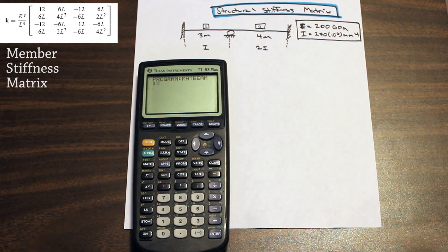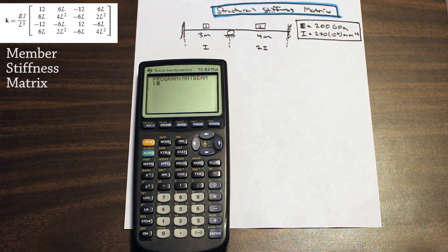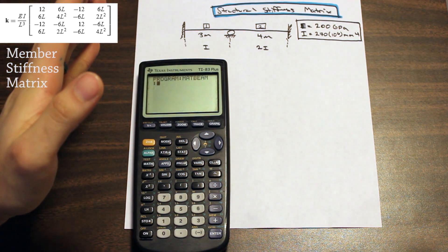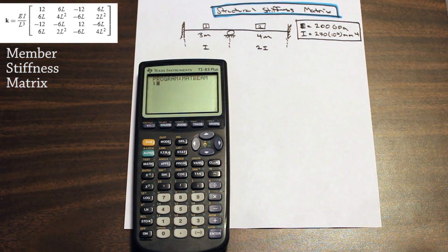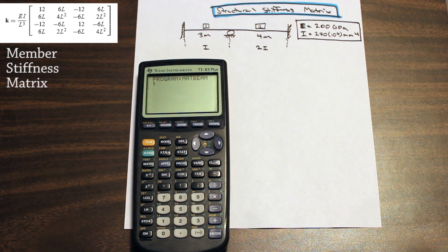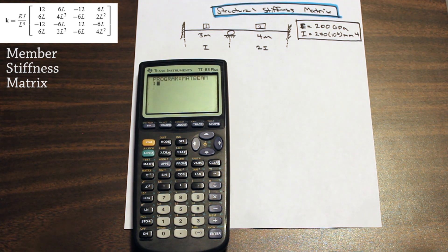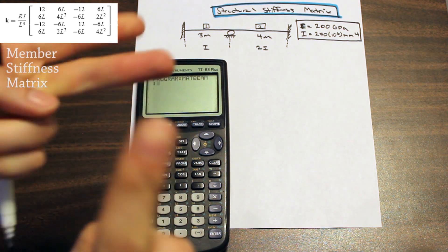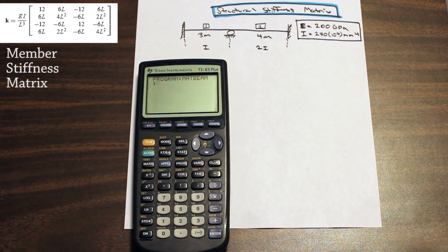Looking at the top left, we have K equal to EI over L cubed times a four by four matrix with some constants and some values multiplied by L. So first, we want to prompt for E, I, and L — we want the calculator to ask us for those values. That's going to be our first step.